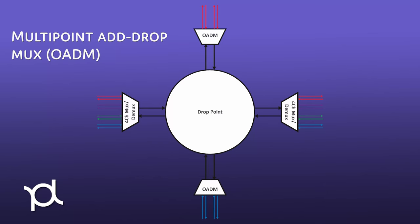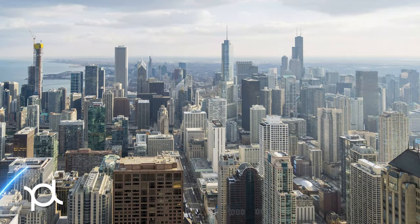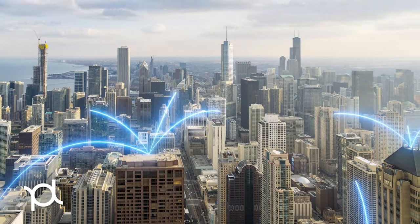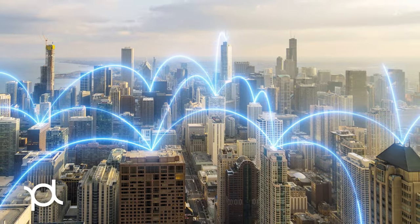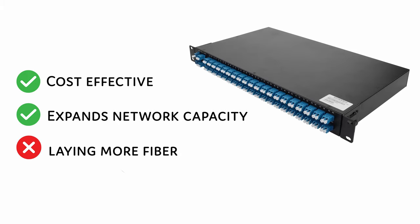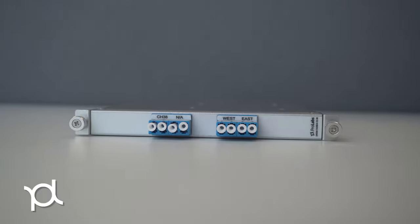A multipoint optical add-drop MUX can filter up to four WDM wavelengths off of a single WDM link, which makes them accessible to a switch at the drop point. This application is a quality solution that ensures a network to be connected even if one link goes down. In short, having a WDM system is a cost-effective solution for your telecommunications needs, as it expands your network's capacity without the added cost of laying more fiber.